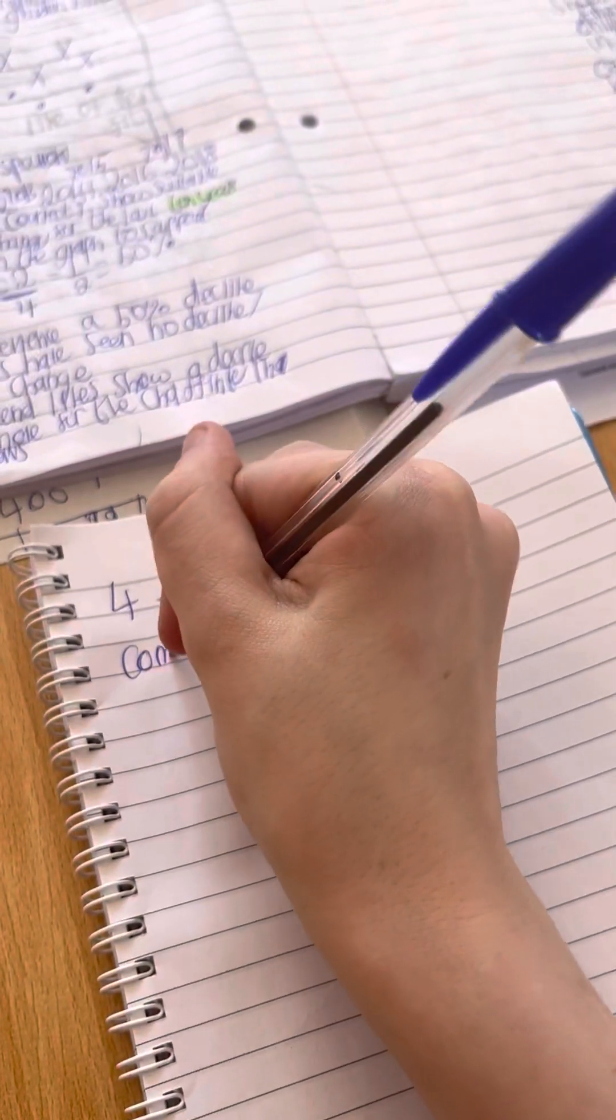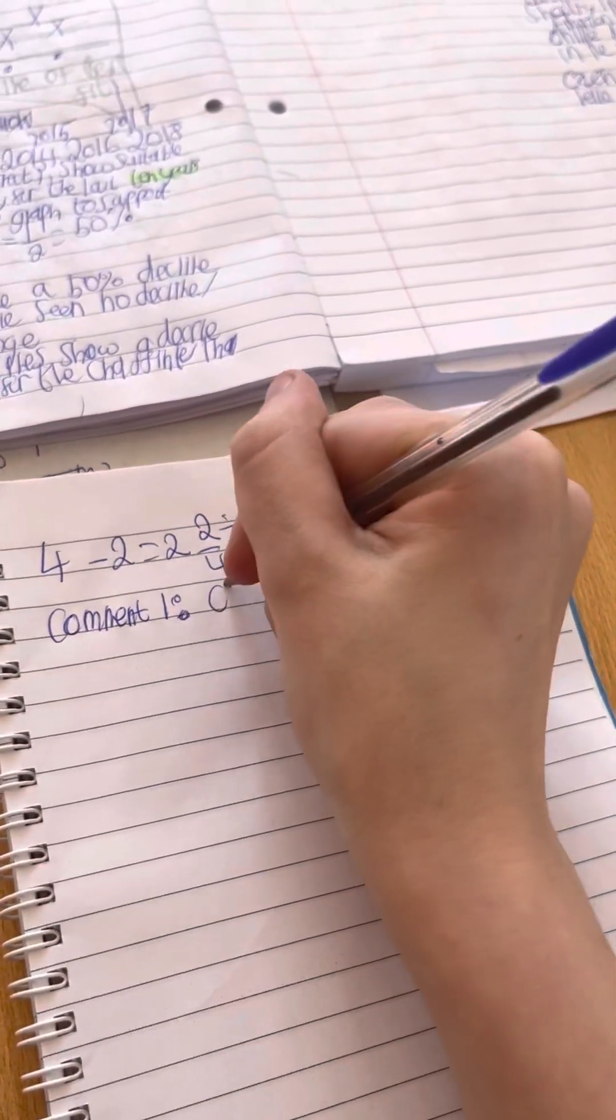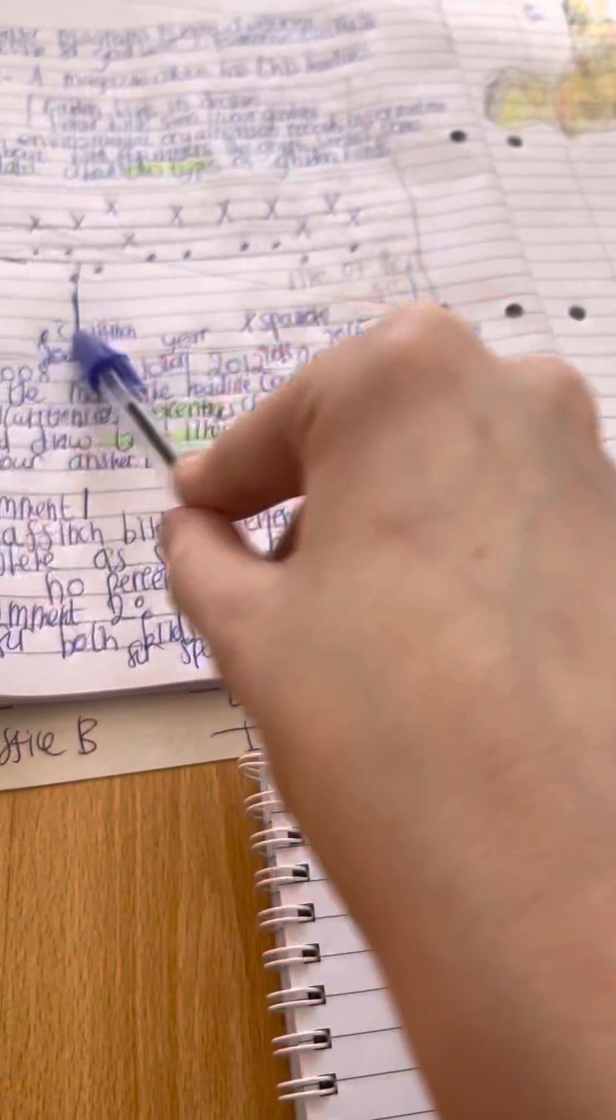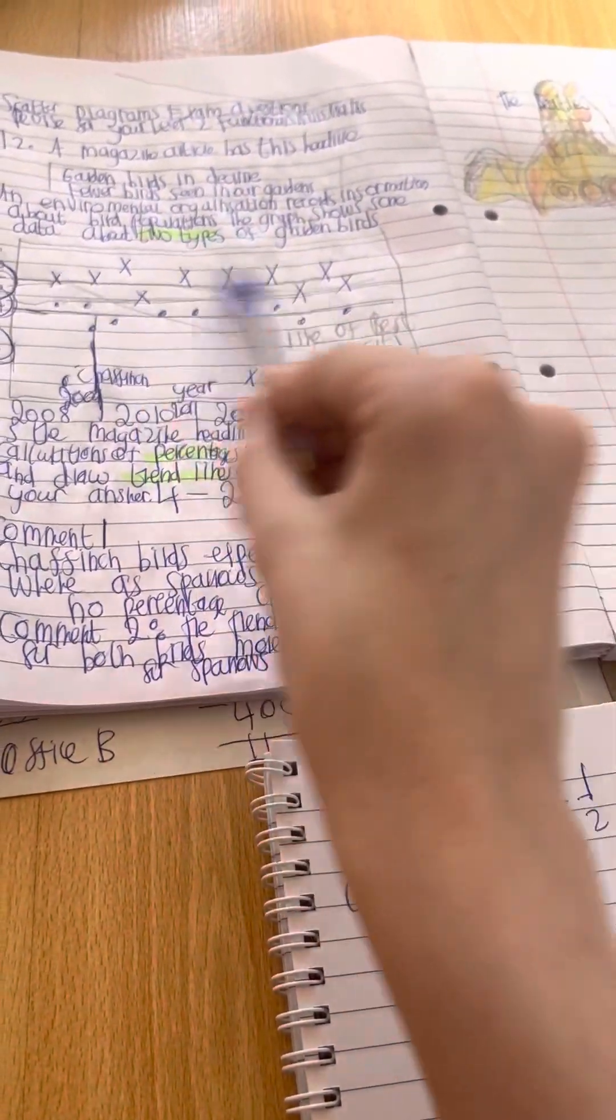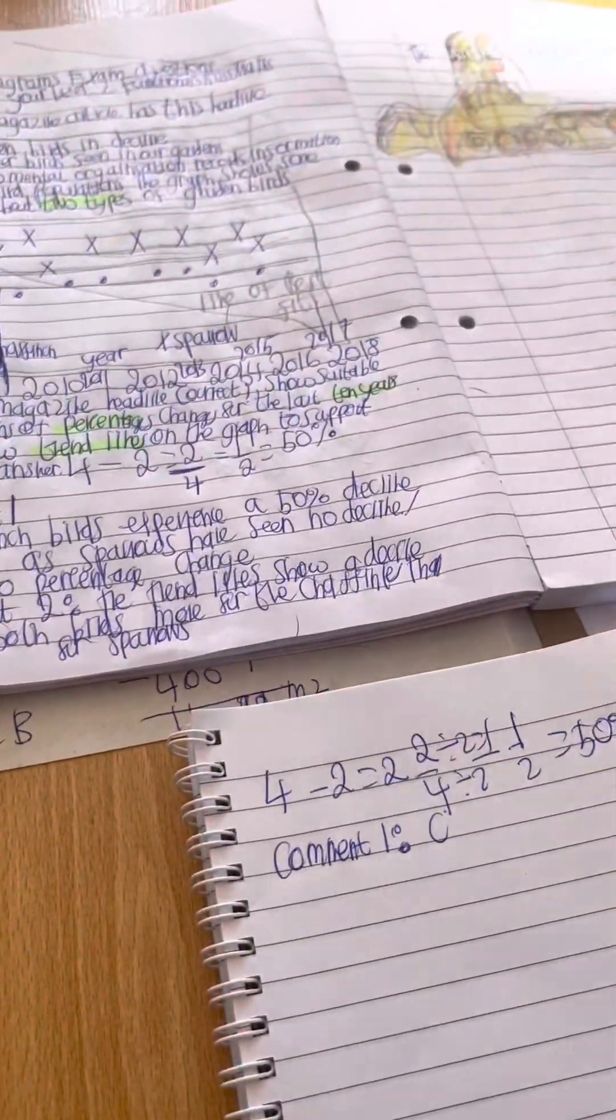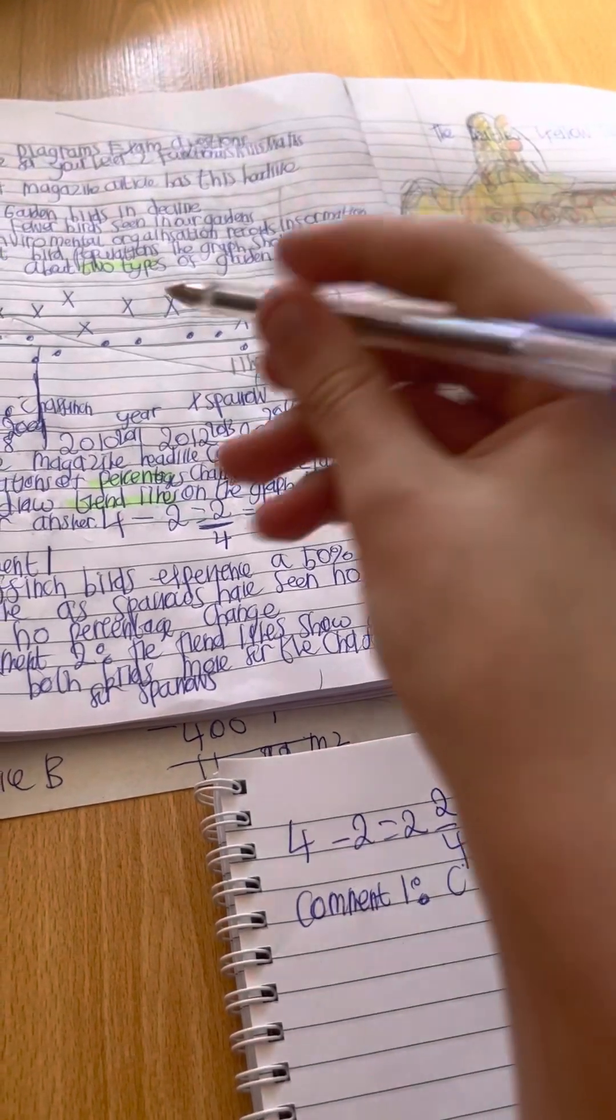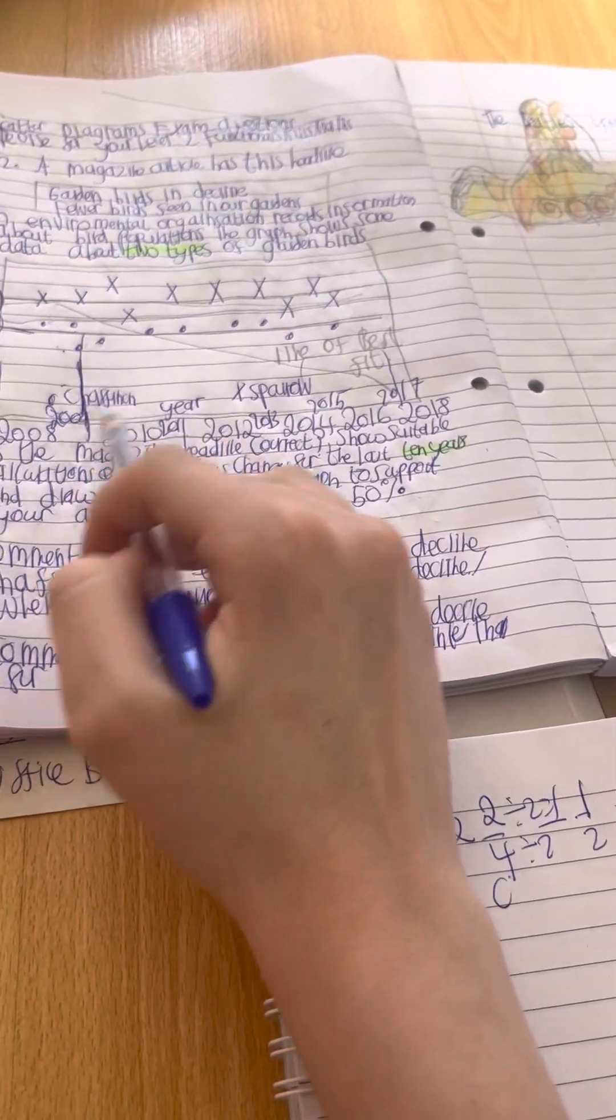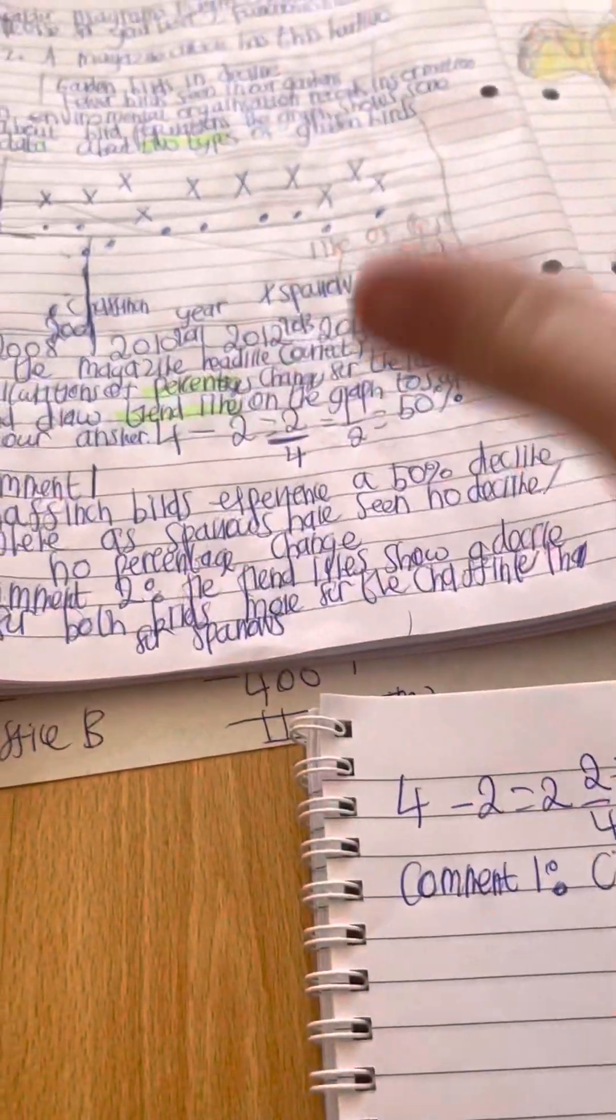So comment 1. So we're going to make a comment about this. So comment 1 says chaffinch. Because as you can see here the chaffinch birds are the dots on the scatter diagram and the sparrows are the x's. So it's like a correlation when you're doing scatter diagram. Because you've got to remember when you record information on the scatter diagram, you've got the dots which is the chaffinch, that's a type of bird basically. And a sparrow is another type of bird.